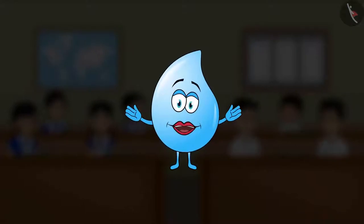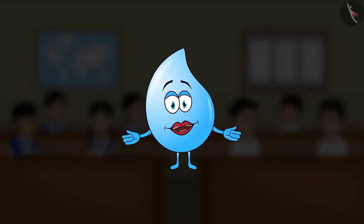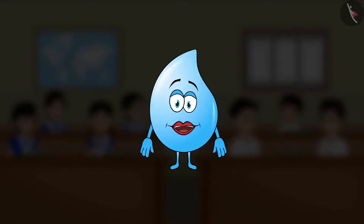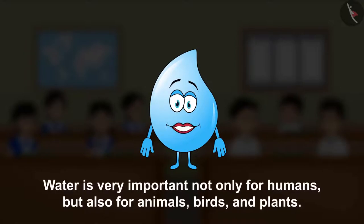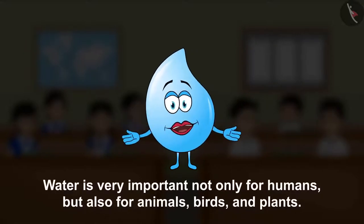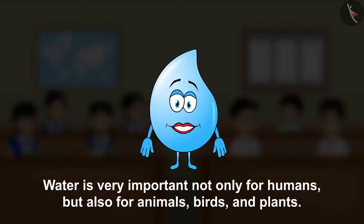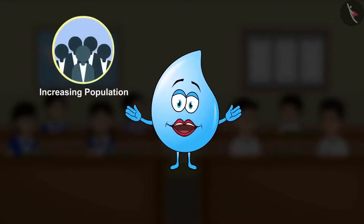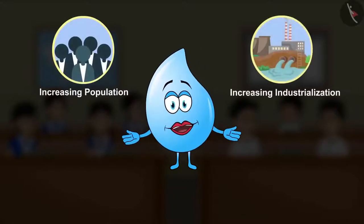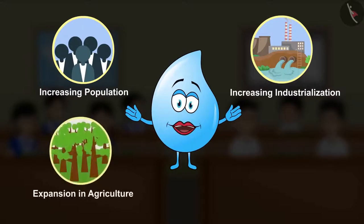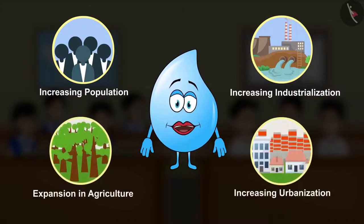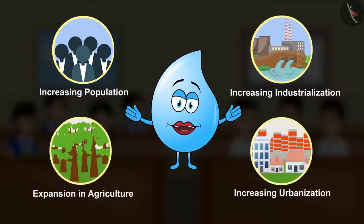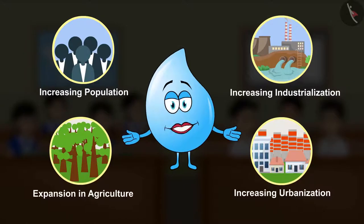Hello kids. You have seen in the video on water as to how essential water is for us. If there is water, there is life. Water is very important, not only for humans but also for animals, birds and plants. Due to increasing population, increasing industrialization, expansion in agriculture, increasing urbanization, the water level is decreasing.